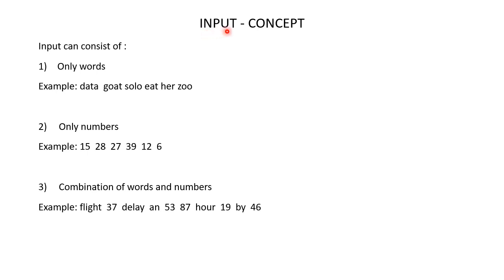Let's now understand the concept of input. Input can consist of only words, only numbers, or a combination of words and numbers. An example for input which consists of only words is: data, goat, solo, eat, her, zoo. An example of input consisting of only numbers is: 15, 28, 27, 39, 12, 6. An example for an input consisting of a combination of words and numbers is a mix of both.